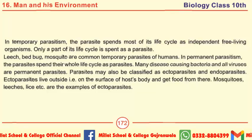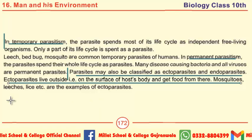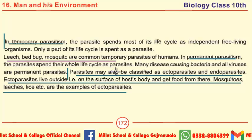Differentiate between temporary and permanent parasitism. Parasites may be classified as ectoparasites and endoparasites. Ectoparasites live outside the body — that is, on the surface of the host body — and get food from there. Examples include mosquitoes, leeches, lice, etc. Leech, bed bug, and mosquito are examples of temporary parasites of humans. Other MCQs may also be taken from the examples of ectoparasites.